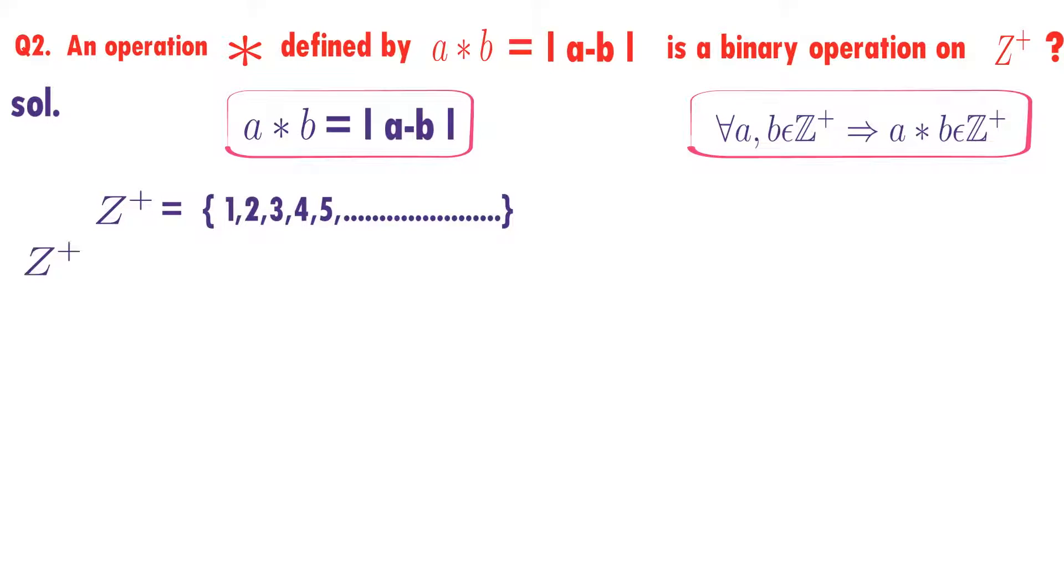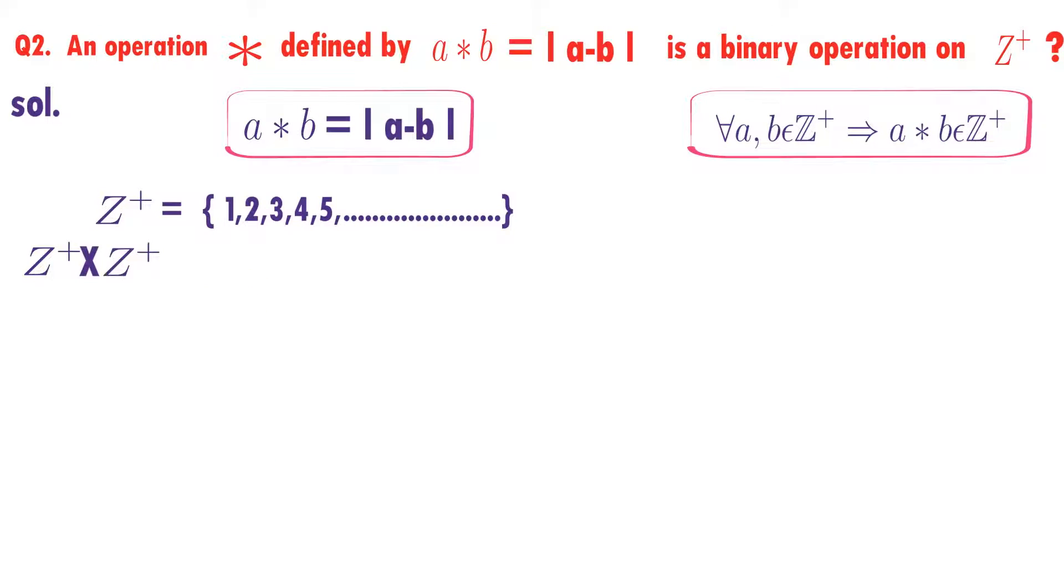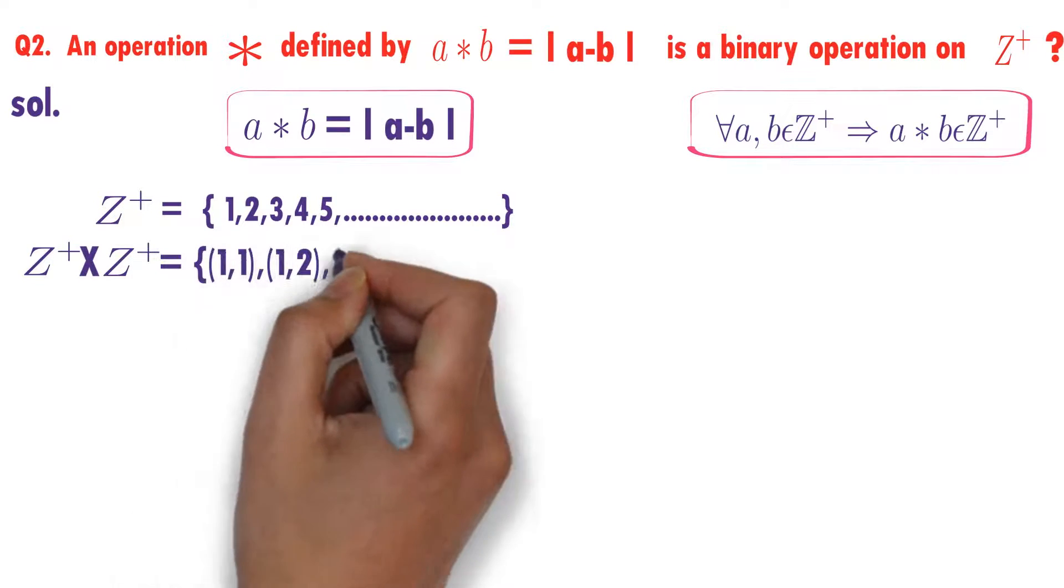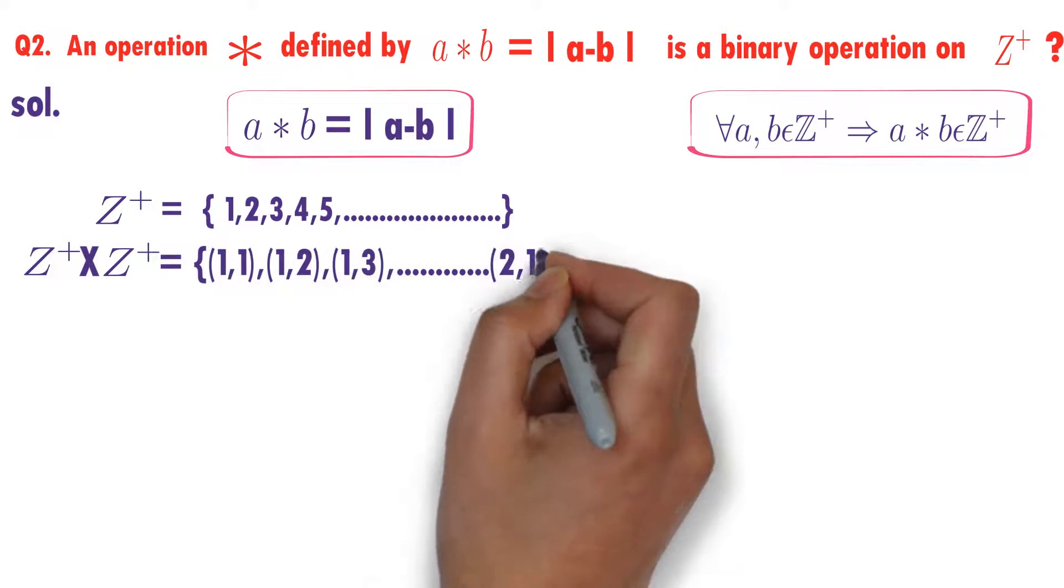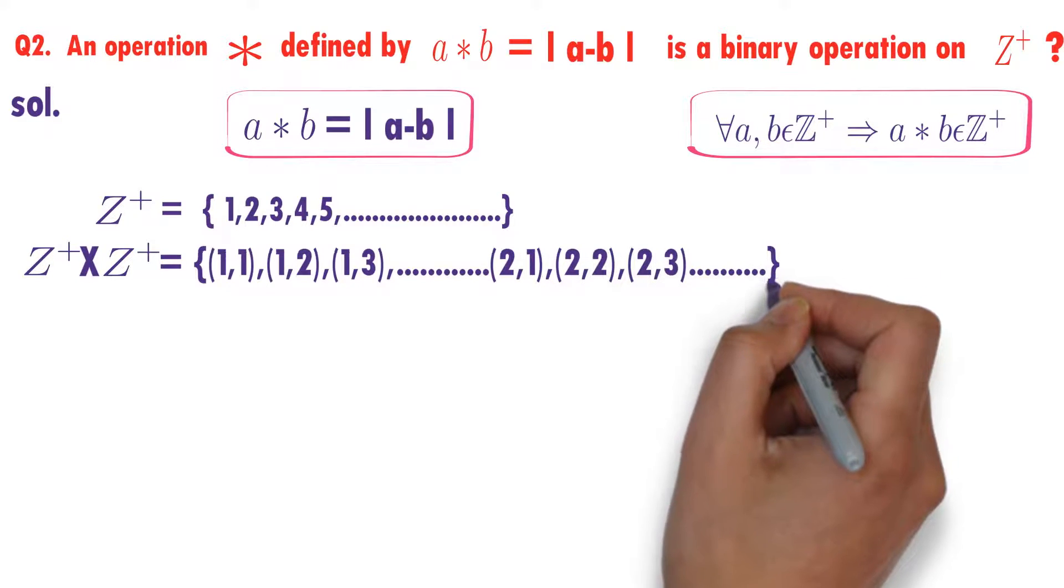Now I'll calculate the Cartesian product of Z plus. Z plus cross Z plus is the set of all ordered pairs. You already learned this in the relations chapter.